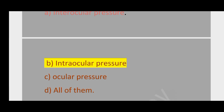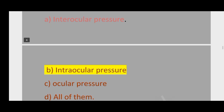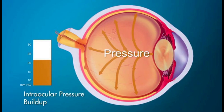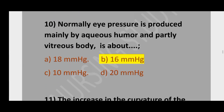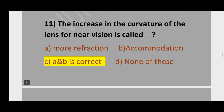Question number 9. The pressure within the eye is called: option A, intraocular pressure; option B, ocular pressure; option C, all of them. The correct option is intraocular pressure. Question number 10. Normally eye pressure is produced mainly by aqueous humor and partly by vitreous body, and is about: option A, 18 mmHg; option B, 16 mmHg; option C, 10 mmHg; option D, 20 mmHg. The correct option is 16 mmHg.